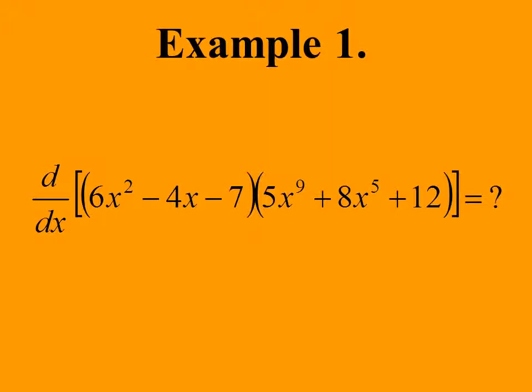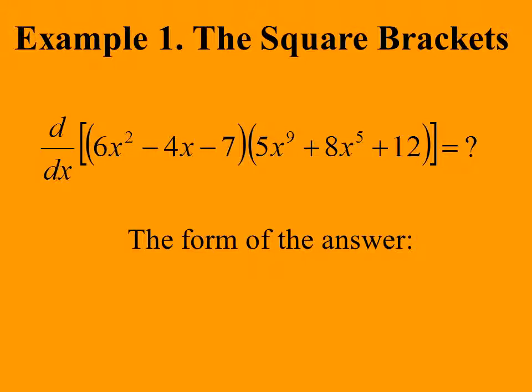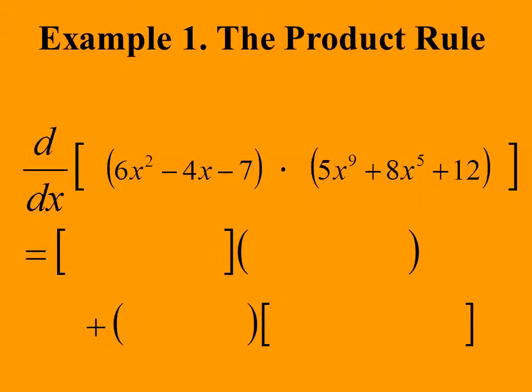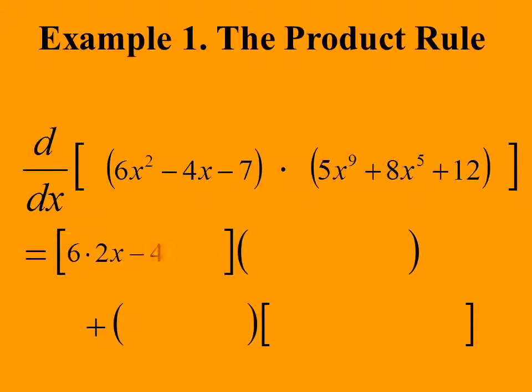Consider the product of 6x² − 4x − 7 and 5x⁹ + 8x⁵ + 12. This is a product of a pair of polynomials. Since we know how to differentiate polynomials, the Product Rule allows us to compute the derivative of this. The square bracket notation gives us the form of the derivative. We now fill in the blanks. We need the derivative of the first, which is 6·2x − 4·1 − 0.